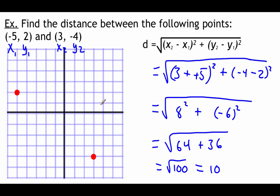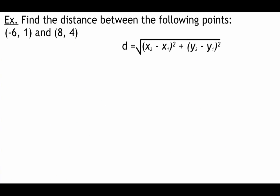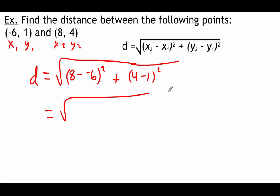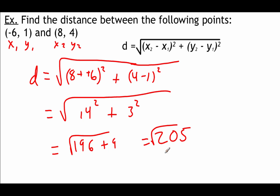Here's another example — now might be a good time to pause the video and try this one on your own, then restart to check your answers. Setting up the distance formula, I'll label the points x₁, y₁ and x₂, y₂. We get d equals the square root of (8 minus negative 6) squared plus (4 minus 1) squared. Eight minus negative 6 is 14, and 4 minus 1 is 3. So we have the square root of (196 plus 9), which is the square root of 205. Punching that into a calculator gives us approximately 14.32 units.